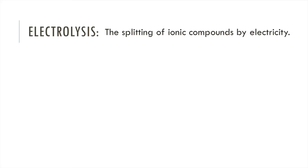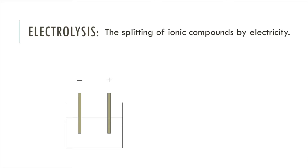Electrolysis is the splitting of ionic compounds by electricity, and the apparatus you'll need is something like this. You have a beaker that contains your ionic compound. Then you've got two electrodes — on the left the negative electrode which is called a cathode, and on the right the positive electrode which is called the anode — and then all of this is hooked up to a power source.